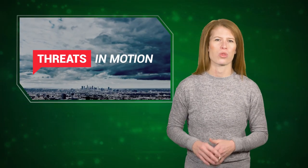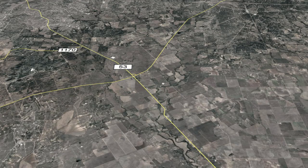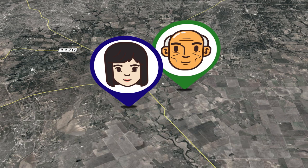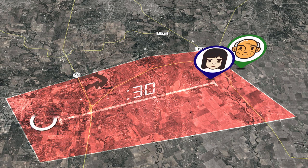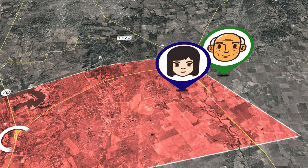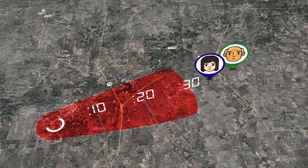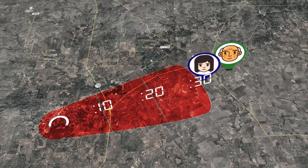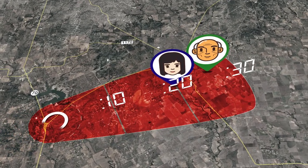Here's an example of how Threats in Motion gives people more time to react. Let's say Jane lives here and Hector lives here. With the traditional warning polygon, Jane gets an alert with plenty of time to take action. Hector, on the other hand, is just outside the warning polygon and doesn't get the alert until the next warning is issued — giving him less time to take precautions. Now compare the same situation with Threats in Motion: with a moving warning, both Jane and Hector receive an equal heads up.